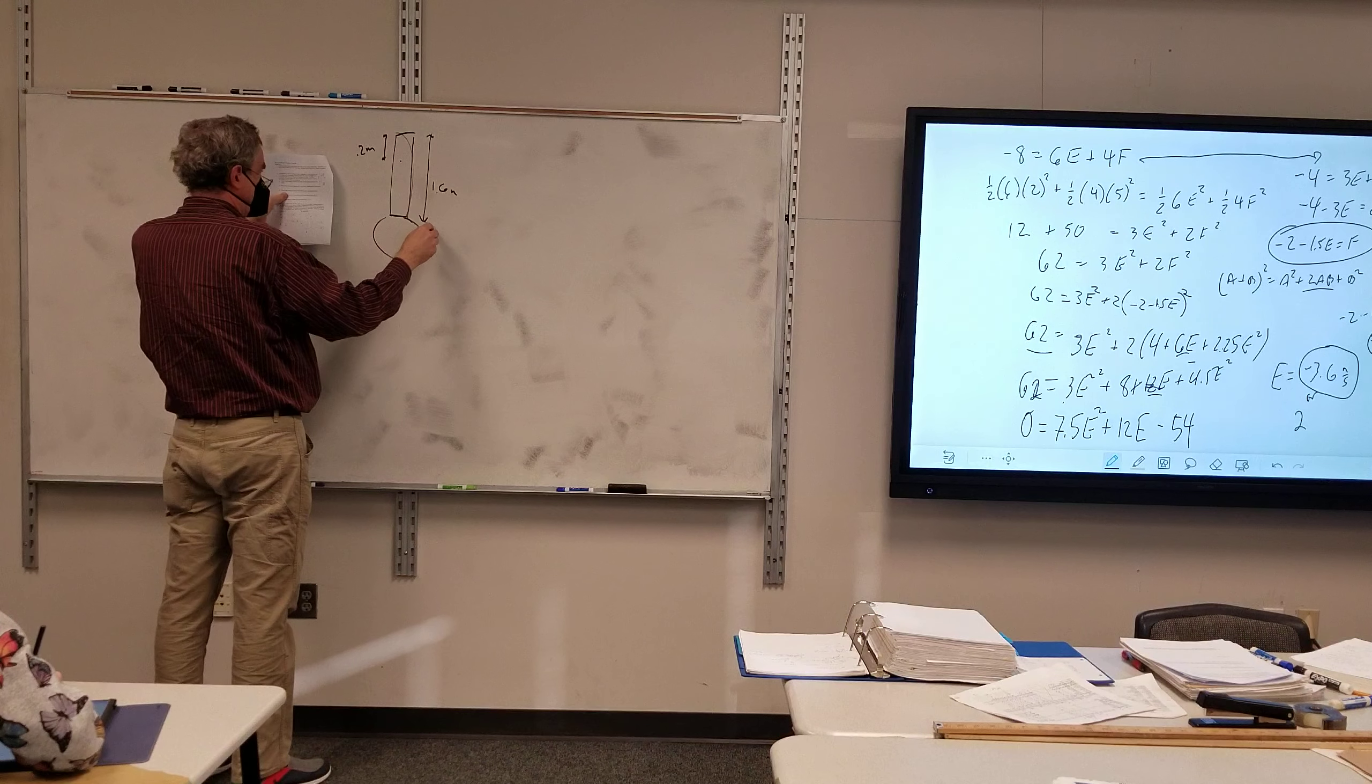These are velocities here. What's the initial velocity of the 4 kilogram mass? Negative 5, so it would be 2 plus 5.